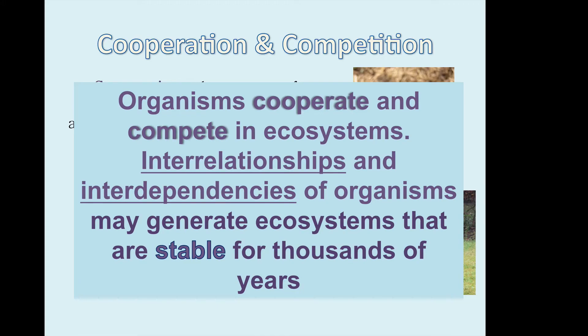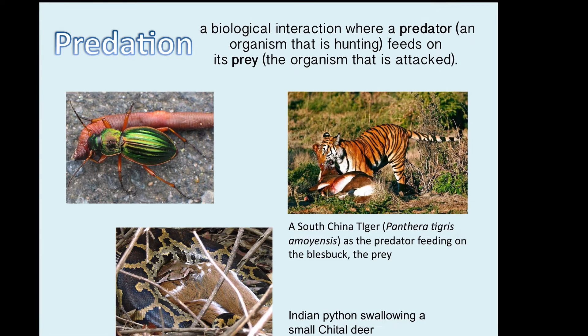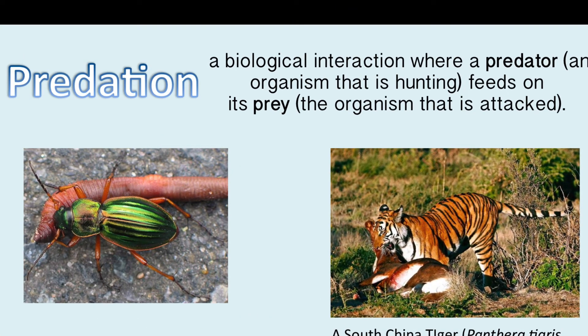Humans should try to stay out of it, because any human interference can definitely tip the balance in a negative direction. Now we're going to look at different types of interrelationships. The first one is predation, where a predator — which is the hunter — feeds on its prey, the organism being attacked.